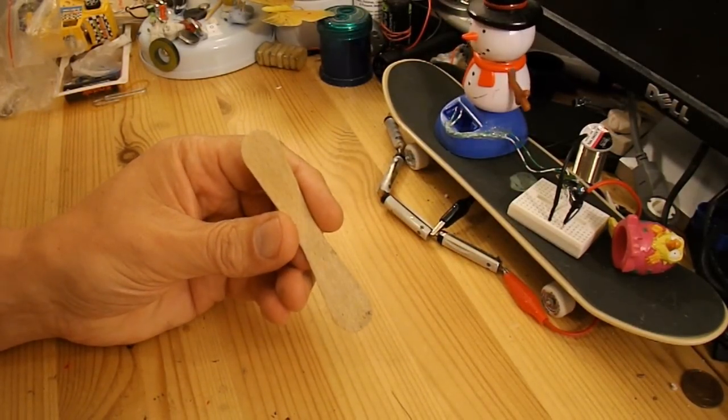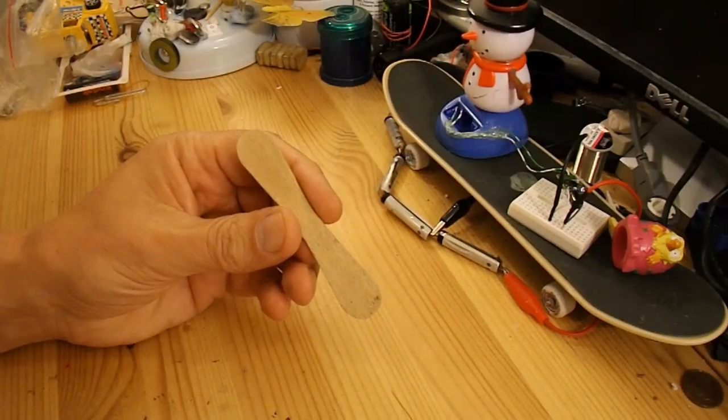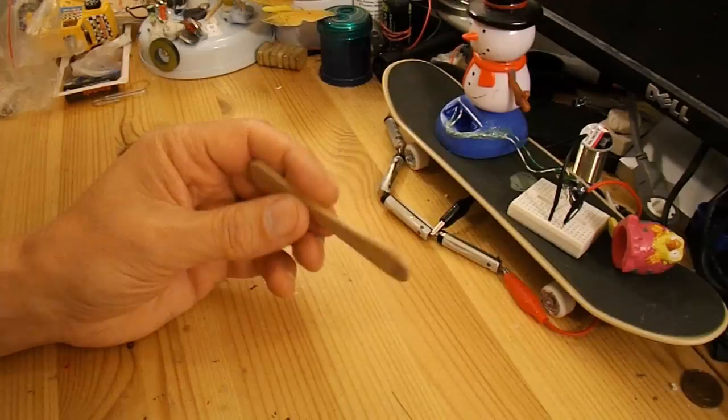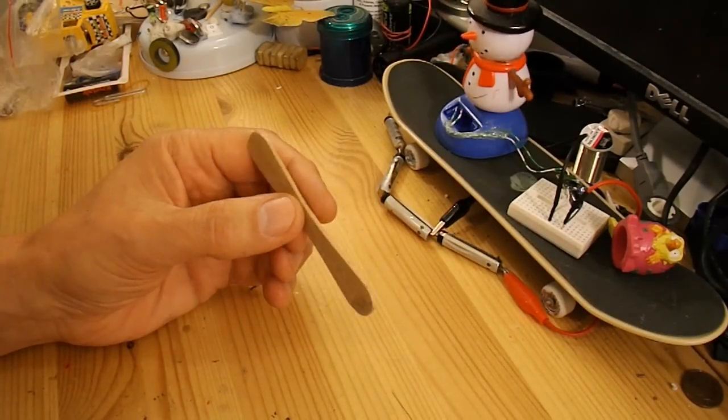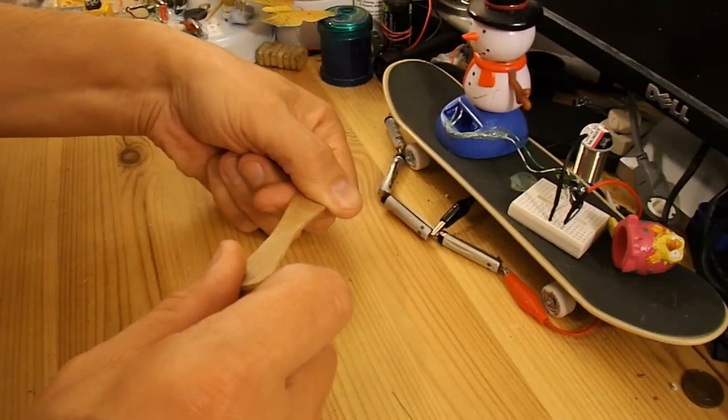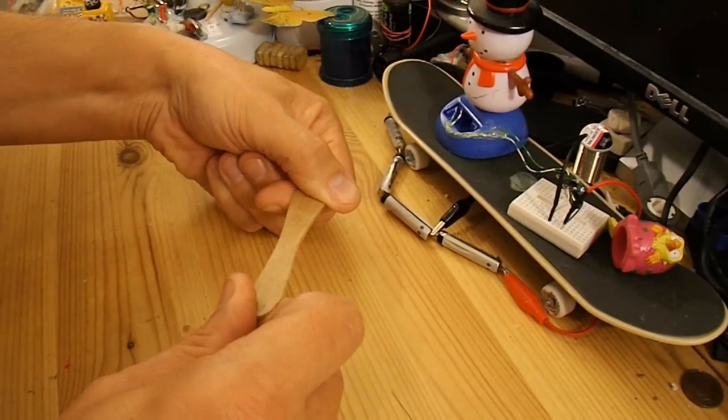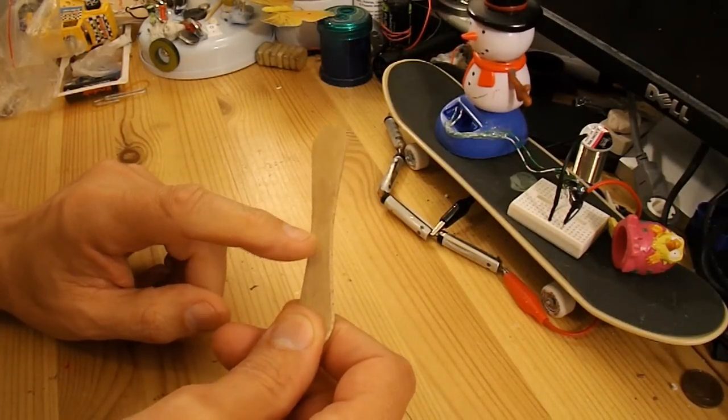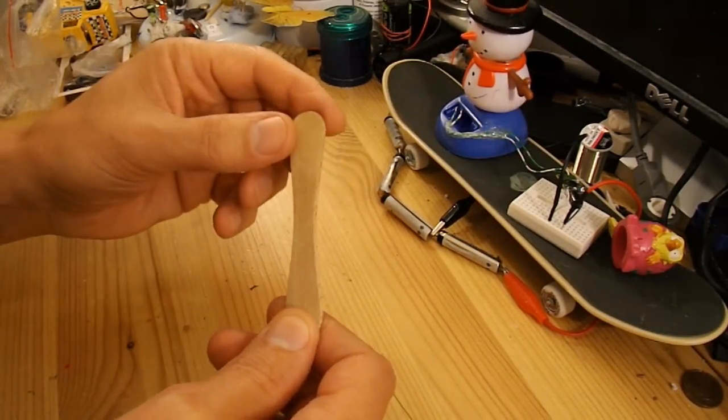What I'm going to do is mark the center of it first and drill a hole in it. And then I'm going to heat it up, steam it or something, put it in hot water and twist it so that we've got a propeller. But I'll mark up the hole and drill the hole first, because it's going to be a bit difficult to do that once it's twisted.